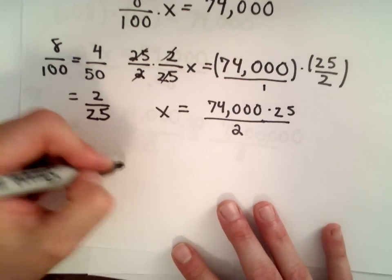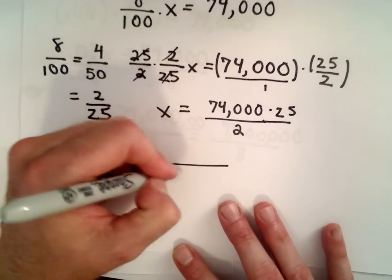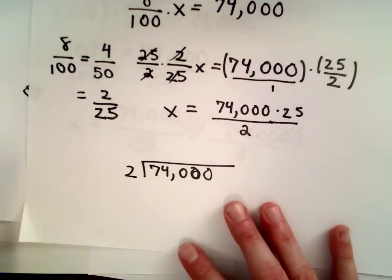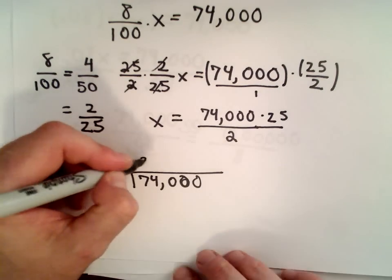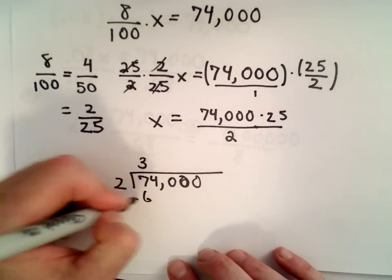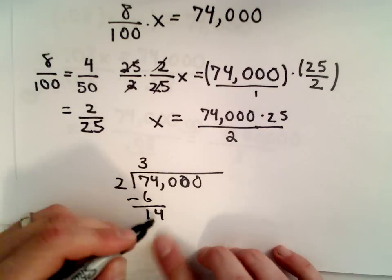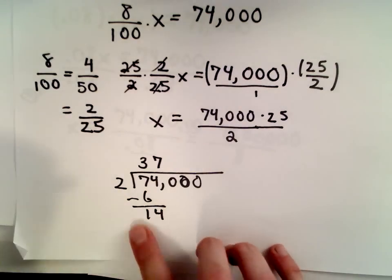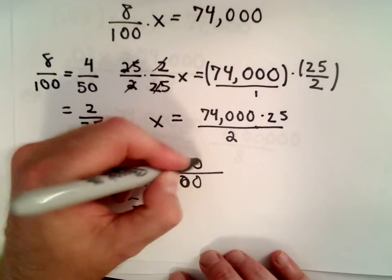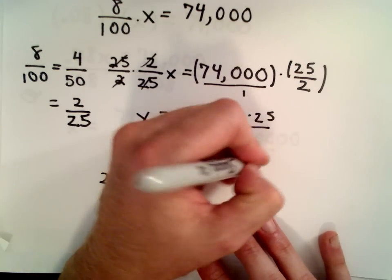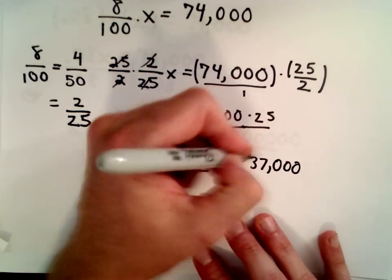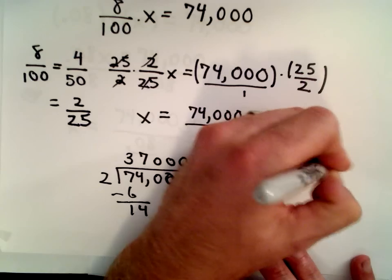So I don't know if this is that much faster at all, in fact, but just a different way to do it. It never hurts to see both ways. If you like the other way better, by all means use it. So 2 will go into 74 three times. And 2 will go into 14 seven times. Again, we're just going to get a bunch of zeros like we did before. So 74,000 divided by 2, well that's 37,000.